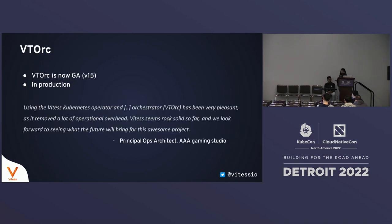VTOrc is now GA. We announced Vitess 15 general availability yesterday, and VTOrc went GA yesterday. But VTOrc is already in production — there are at least two deployments we know of where VTOrc is being used to do unplanned failovers and deal with primary failures, including one using the Vitess Kubernetes operator.